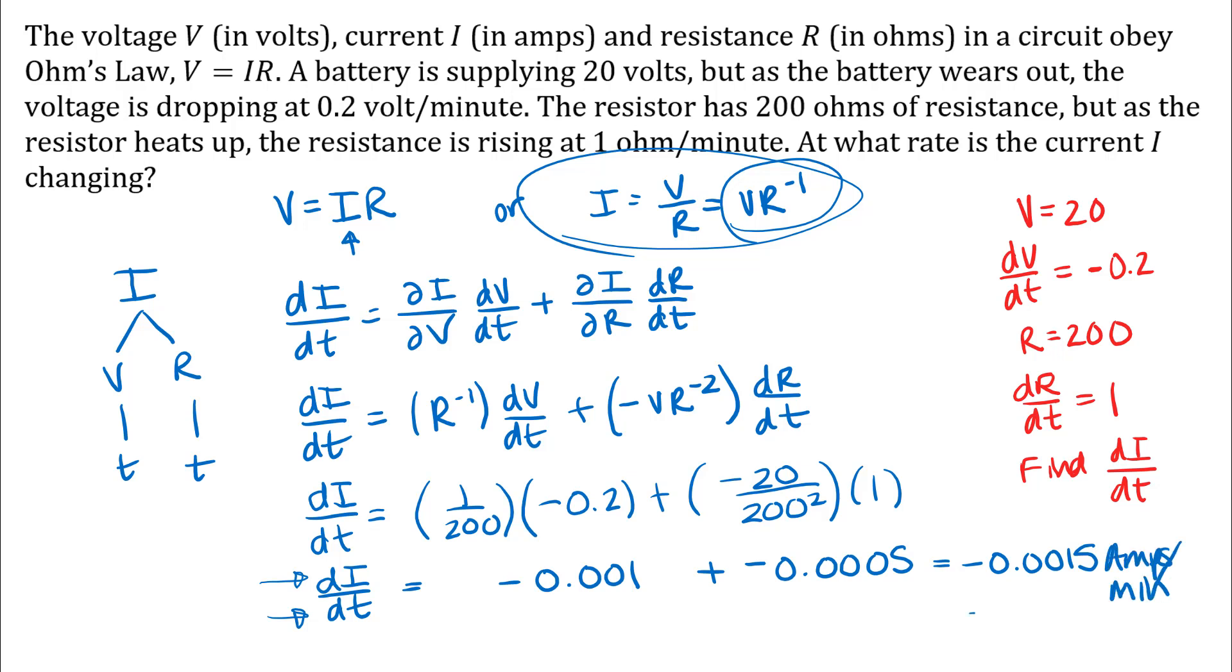And the other important thing about this answer here is that because I have a negative rate of change, I know that the current is decreasing, right? A negative rate of change means a decreasing function output. Okay, try some other homework problem.